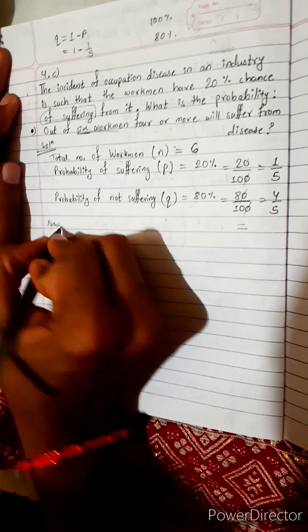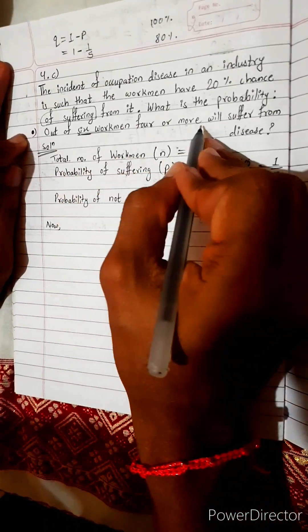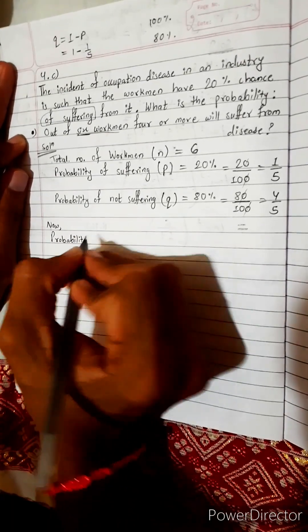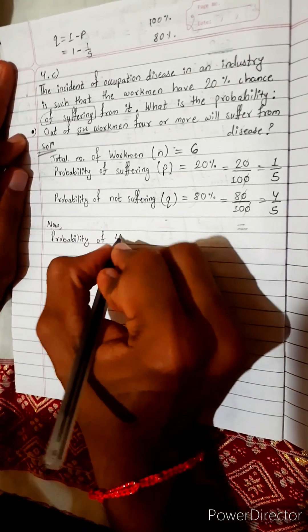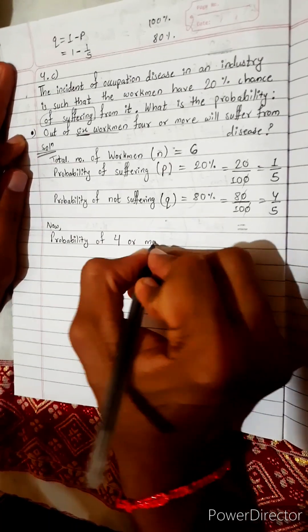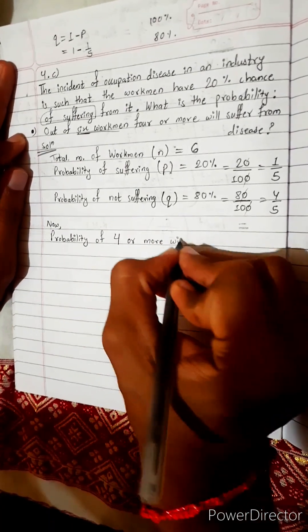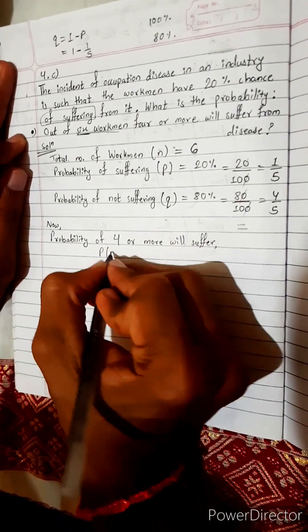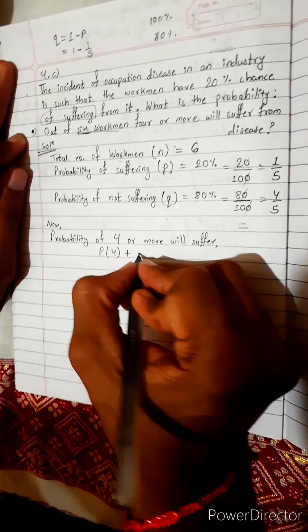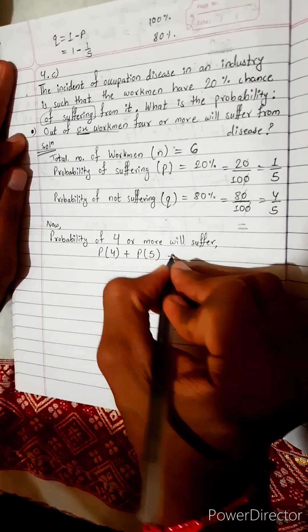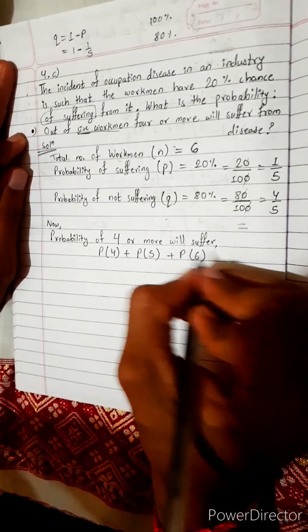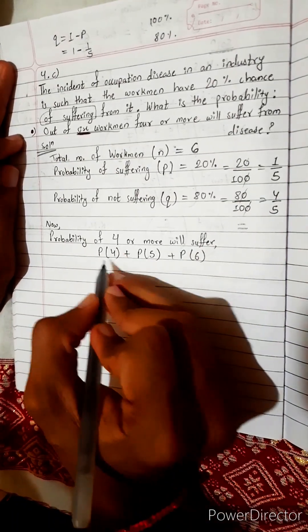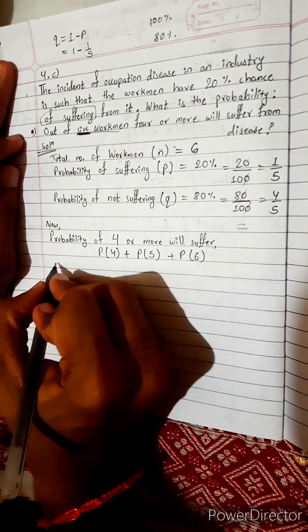Now what is asked? Out of 6 workmen, 4 or more will suffer, so probability of 4 or more will suffer. This is given by probability of 4 or more. More means more than 4, so 5 or 6 also, but not 7 because there are only total 6 workmen. So either 4 or more than 4, only this much.